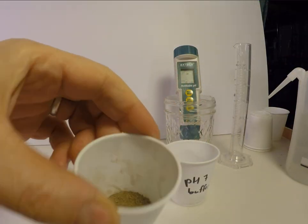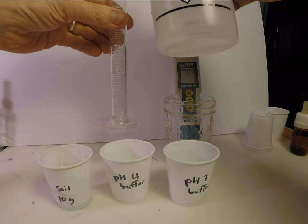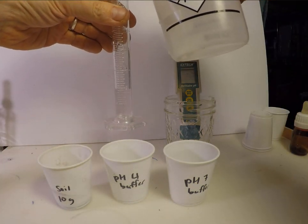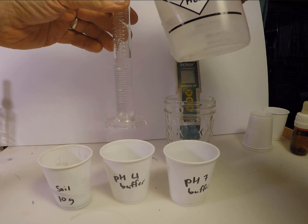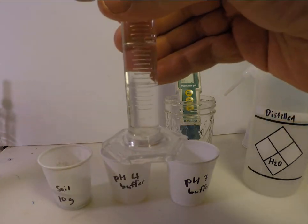Then, a 2 to 1 volume to weight suspension of soil in water is made. In this case, we are mixing 20 milliliters of water with 10 grams of soil. We could also use 40 milliliters of water and 20 grams soil.